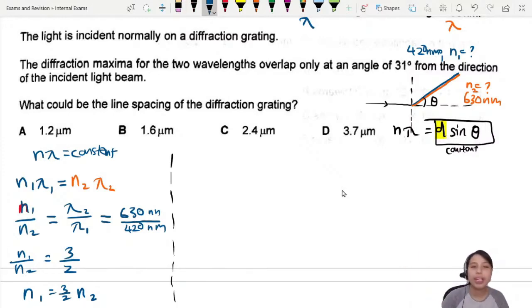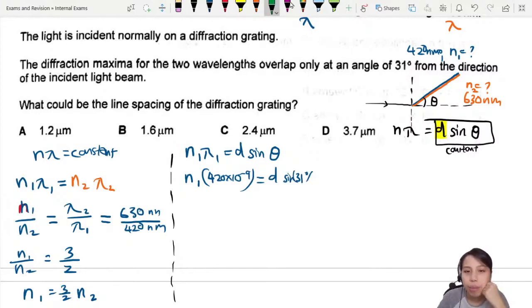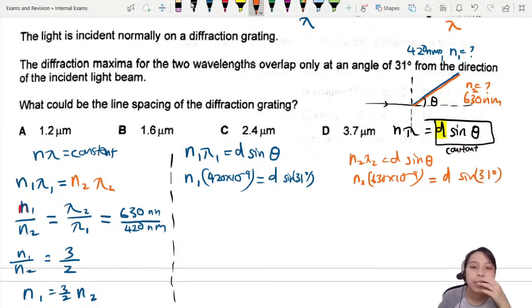Let's use the equation now for blue color, the first one. So n1 lambda1 equals d sine theta. n1 I don't know, lambda1 I know: 420 times 10 to the negative 9, d I don't know, sine I know: 31 degrees. I'm stuck. Never mind, move on to the next one. Another possible equation for the orange light: n2 lambda2 equals d sine theta. n2 I don't know, lambda2 I know: 630 times 10 to the negative 9 equals d sine 31.